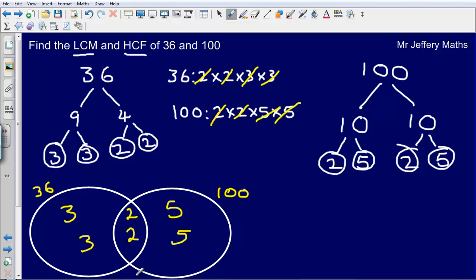So I've populated my Venn diagram. Now my highest common factor is simply this bit in the middle here. So the highest common factor is going to be 2 multiplied by 2. So my highest common factor, the highest number that fits into 36 and 100 would be 4.